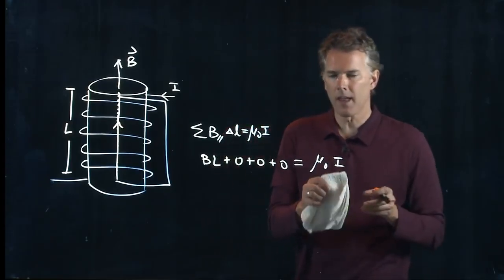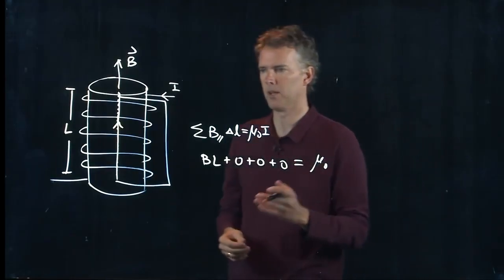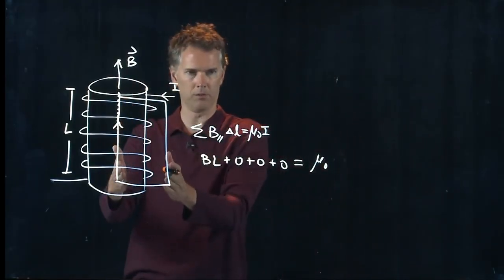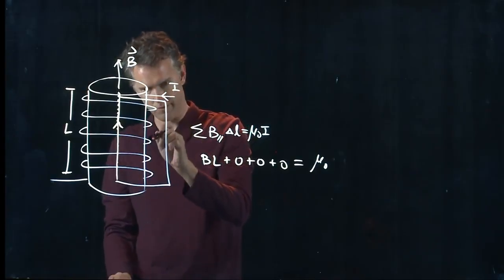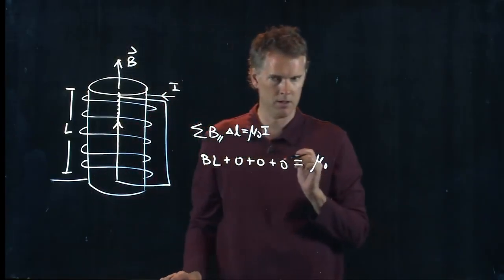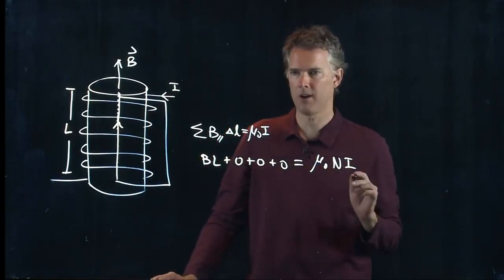Now, we said that over here the I is how much current are you intercepting with this loop that you just drew. And I've got one wire going through, two, three, four, five wires that are going through my loop. And so that is N times I.